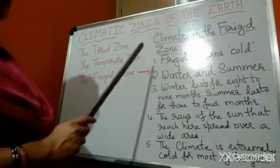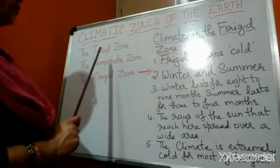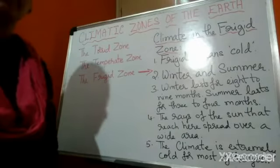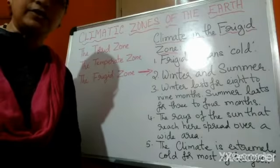So, this is about the three zones, children: the torrid zone, temperate zone, and frigid zone. Thank you, children.